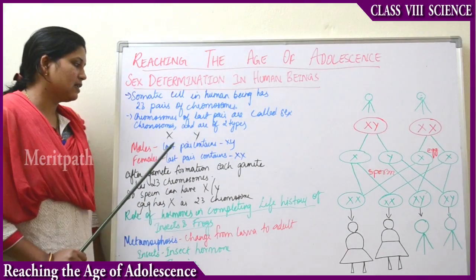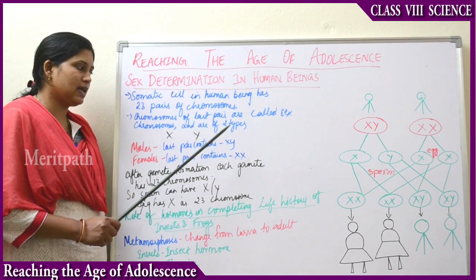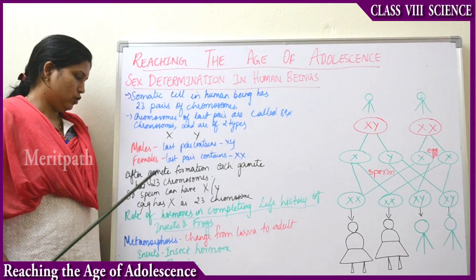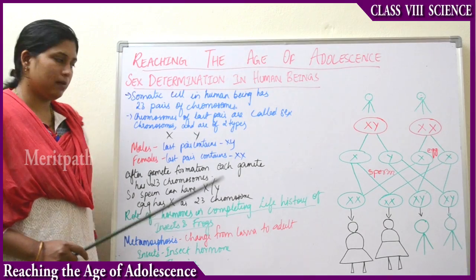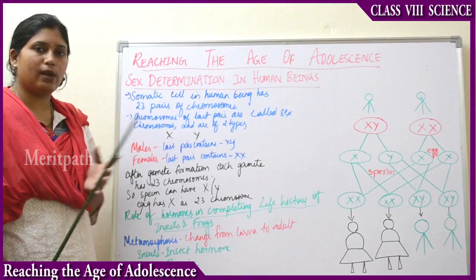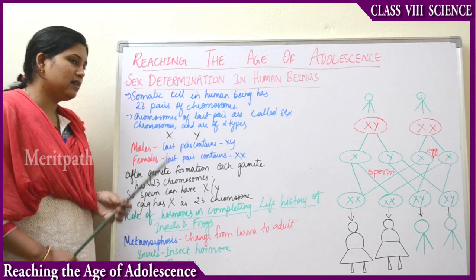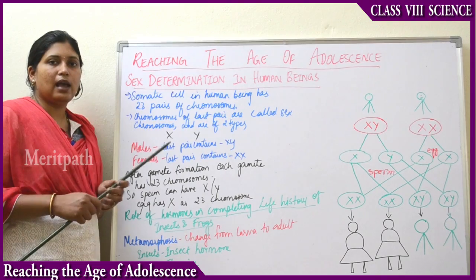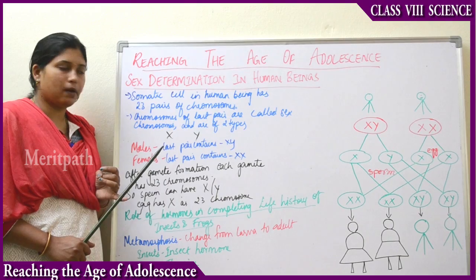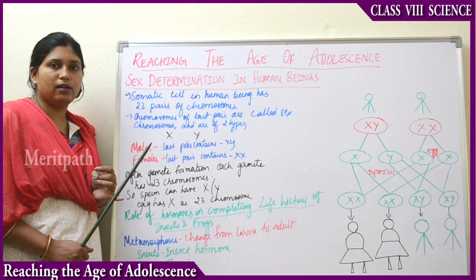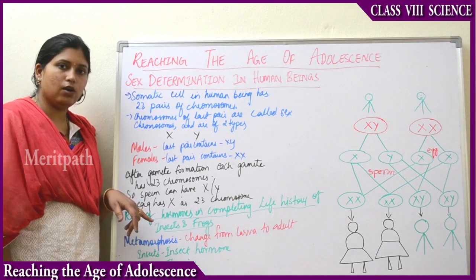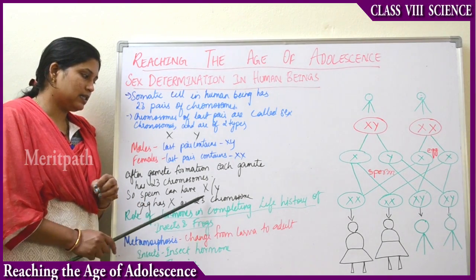After gamete formation, when sperms are produced, each gamete has 23 chromosomes. The sperm is a single cell, and the last chromosome in the sperm can have either X or Y. Whereas an egg also has 23 chromosomes, but the egg can only have X as its 23rd chromosome. So sperm can carry either X or Y, whereas the egg always carries X.